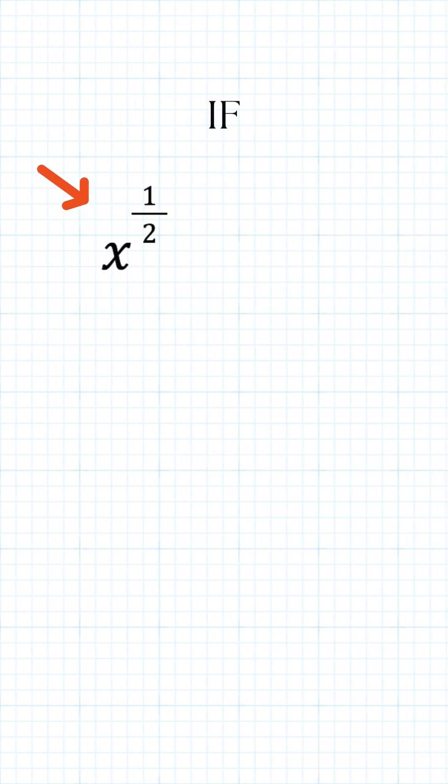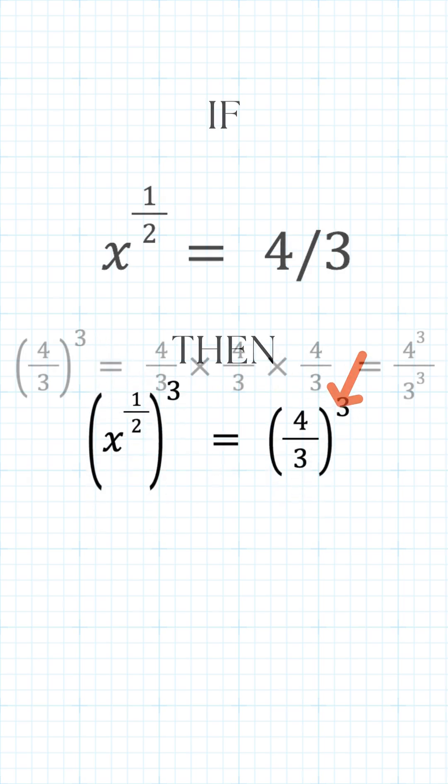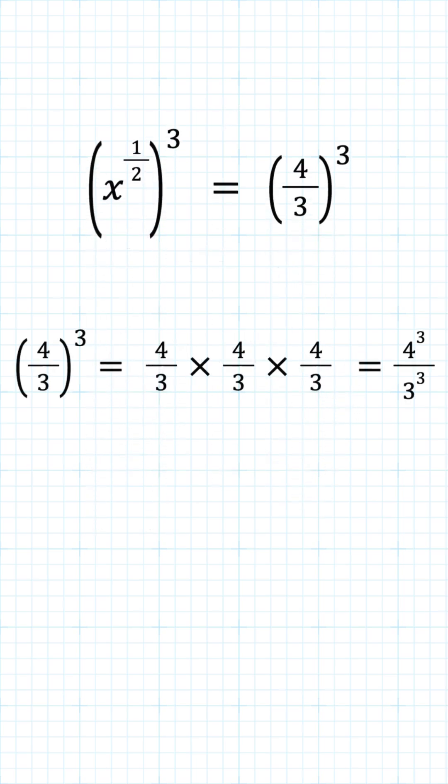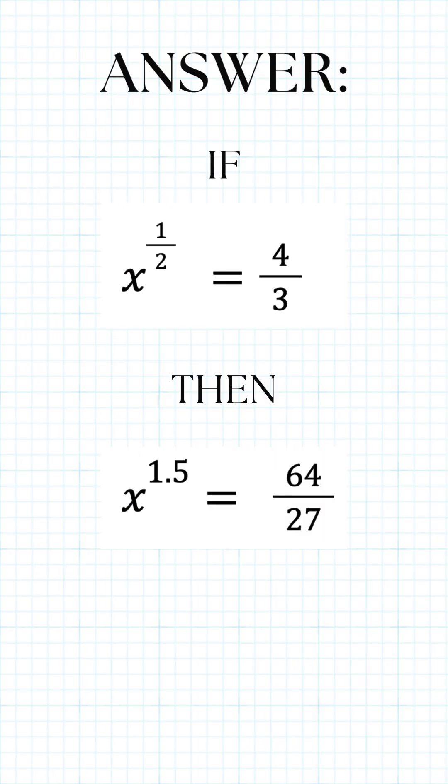So if x to the power of 1/2 is equal to 4/3, then x to the power of 1.5 is equal to x to the power of 1/2 cubed, which equals 4/3 cubed. And 4/3 cubed is equal to 4 cubed over 3 cubed, which is 64/27. So x raised to the power of 1.5 equals 64/27.